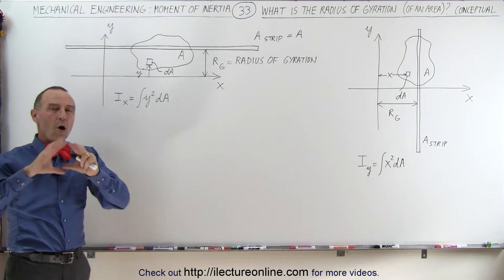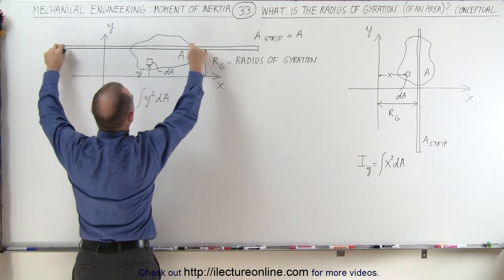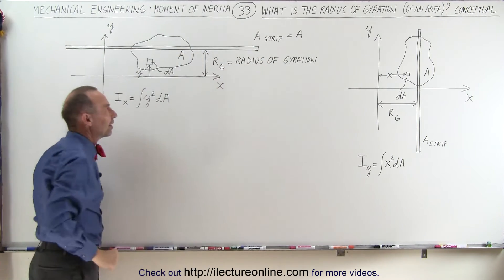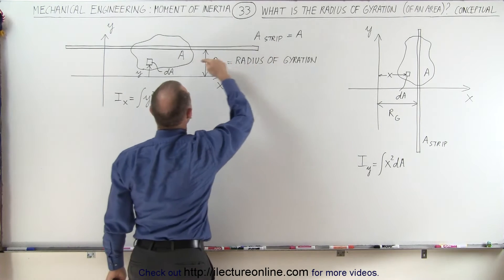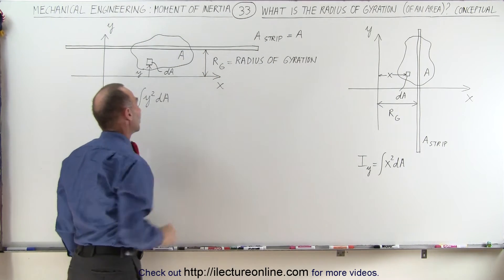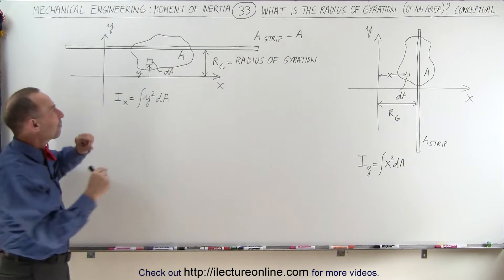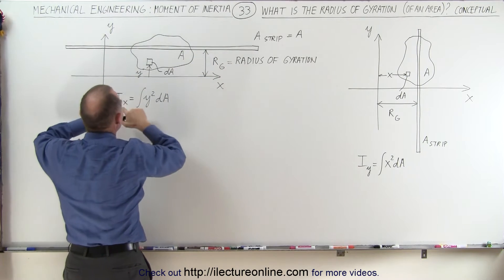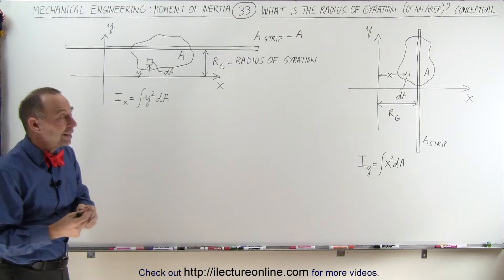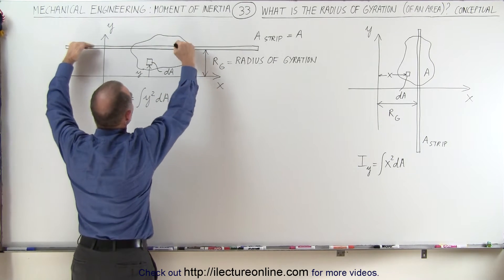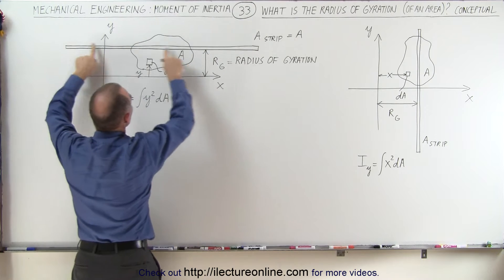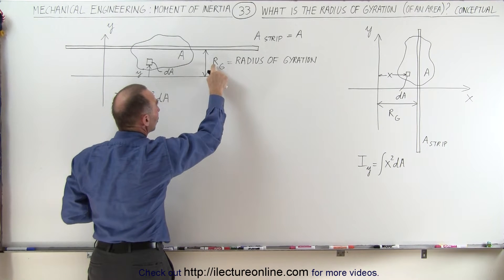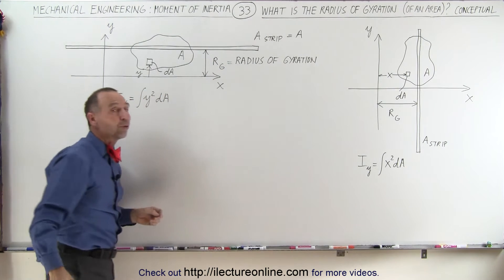What if we could take all of that area and draw it as a thin little strip? Of course, we have to make the strip very long since it's very thin, so that the strip contains the exact same amount of area. Then where would we have to place the strip so that if we calculate the moment of inertia of the strip, we get the exact same value? Since the strip is really thin, we don't have to integrate over the thickness. We can simply take the area of the strip and multiply it times the distance to the x-axis squared. That distance we'll call R sub G, defined as the radius of gyration.